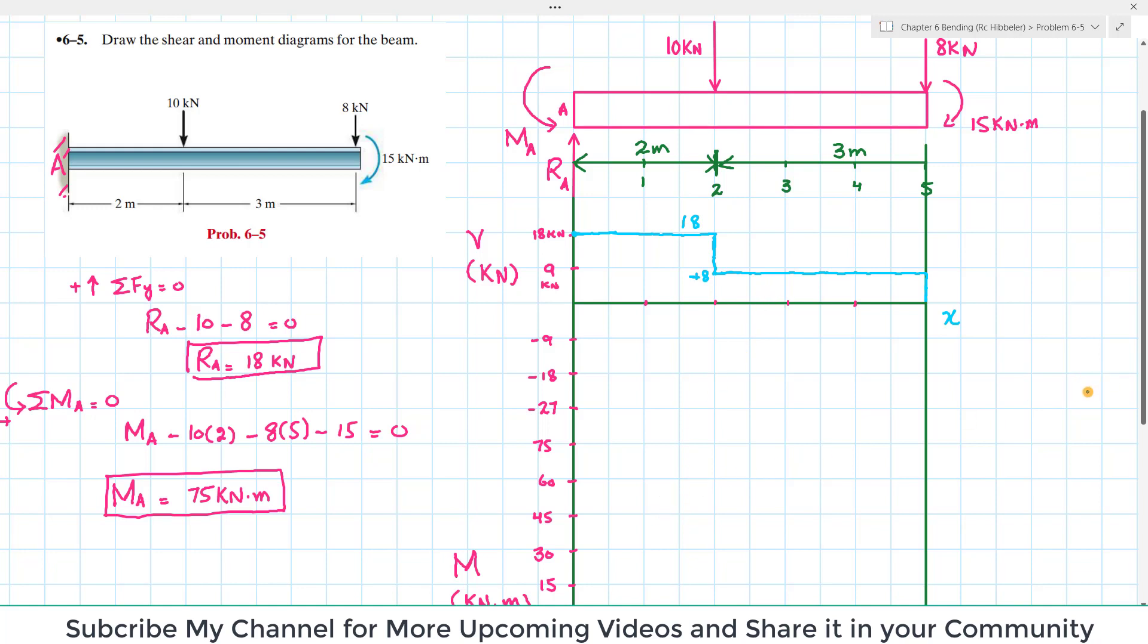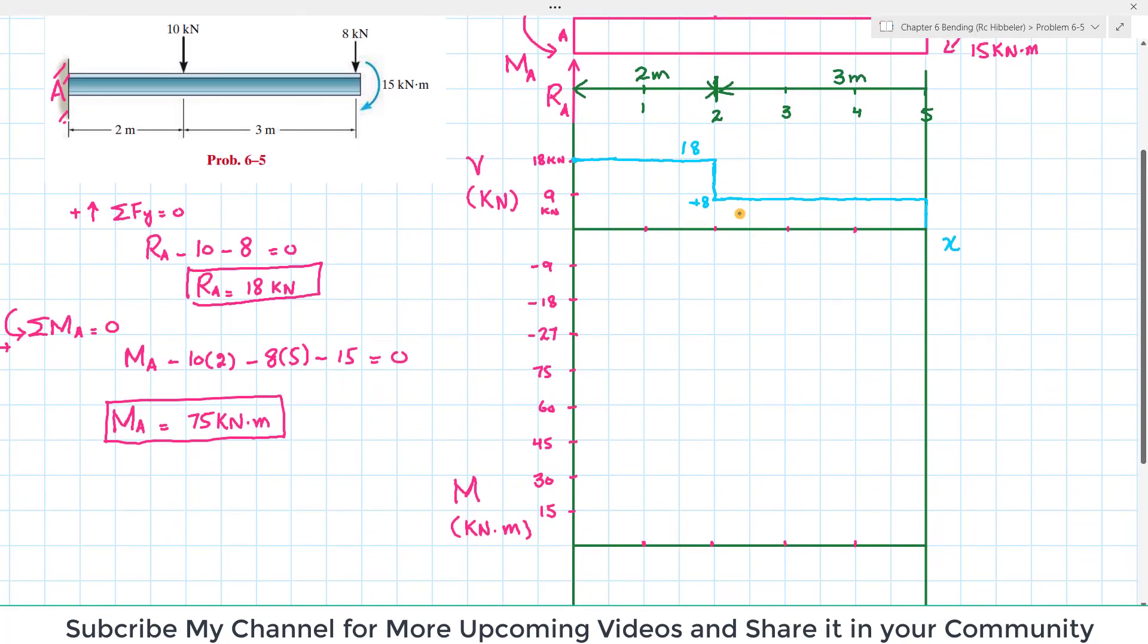I'll move toward the bending moment diagram. From this point till 2 meters, the area under the shear force is 18 into 2. At point A there is external moment MA which is 75 kN·m. Each block is 15 kN·m, so 75 is this point.